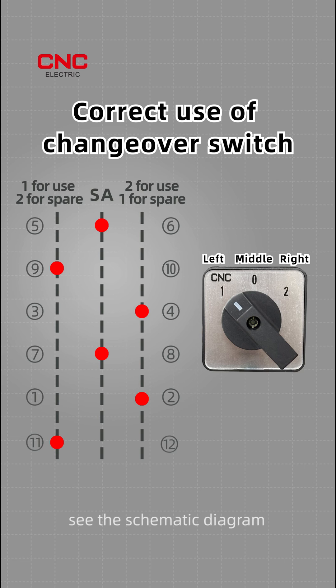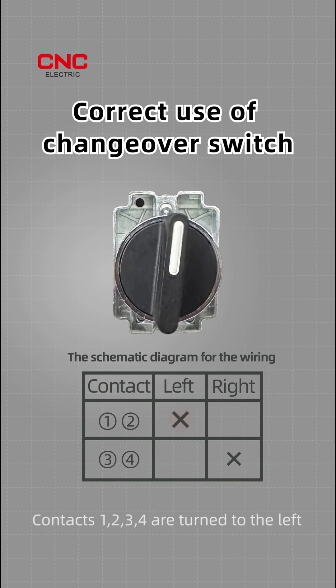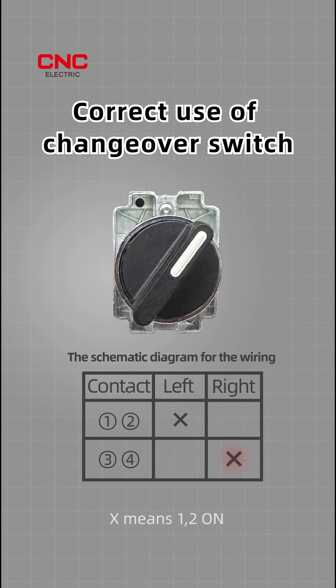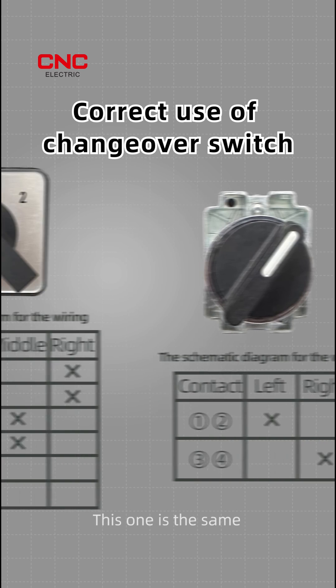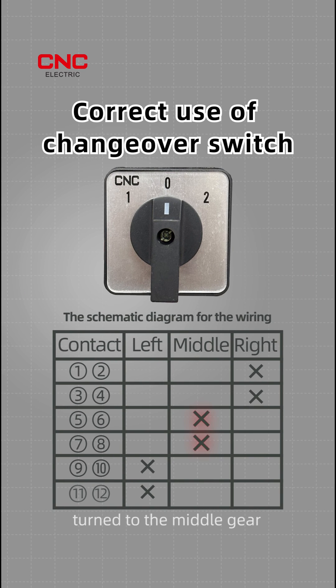Besides, see the schematic diagram for the wiring. Contacts 1, 2, 3, 4 are turned to the left. X means 1, 2 on, and the right X for 3, 4 on. This one is the same, and when the switch is turned to the middle gear, contacts 5, 6 and 7, 8 are on.